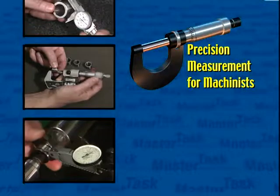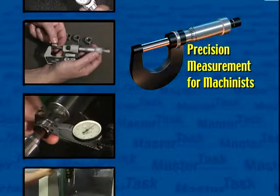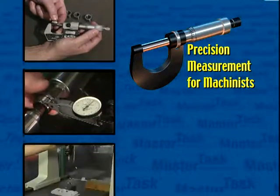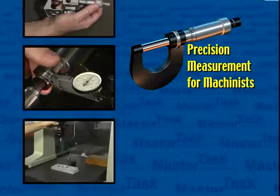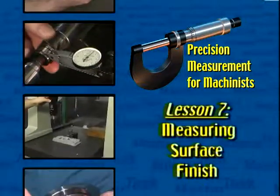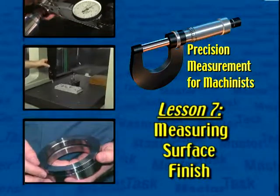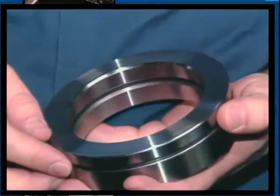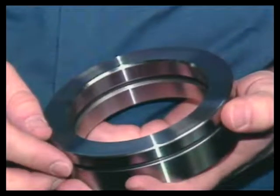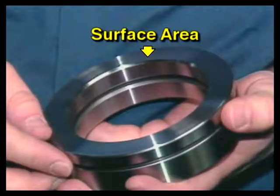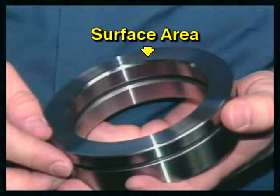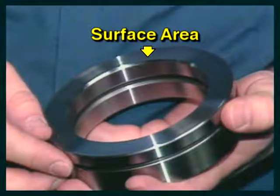Precision Measurement for Machinists, a Master Task Multimedia Program. Lesson 7: Measuring Surface Finish. The surface of a workpiece feature is the boundary which separates the feature from another object, substance, or space.